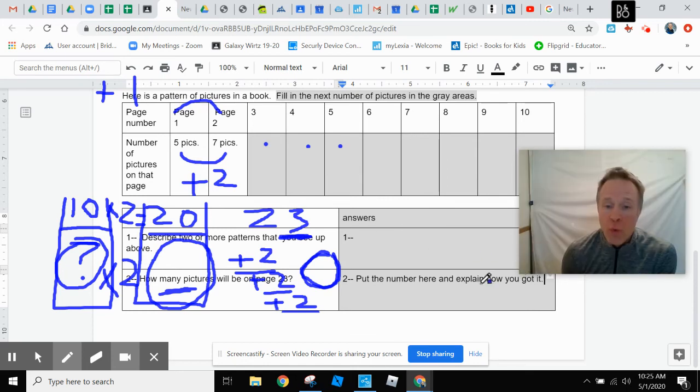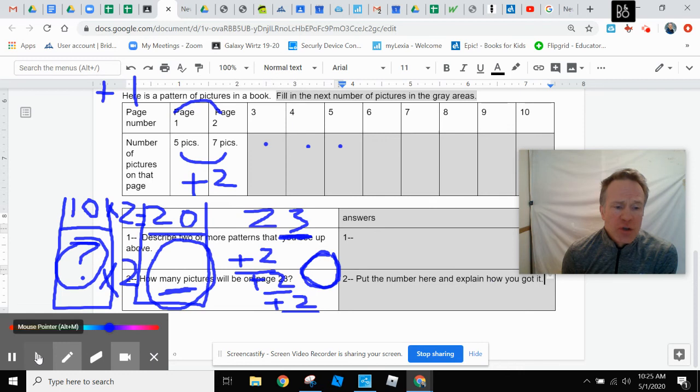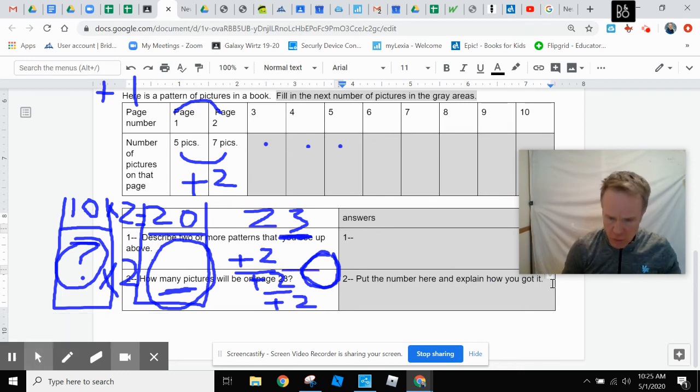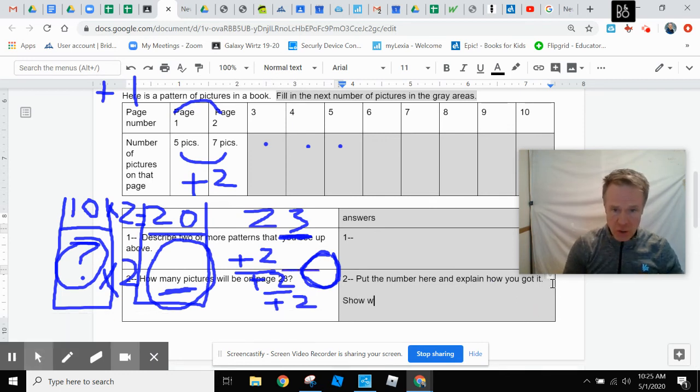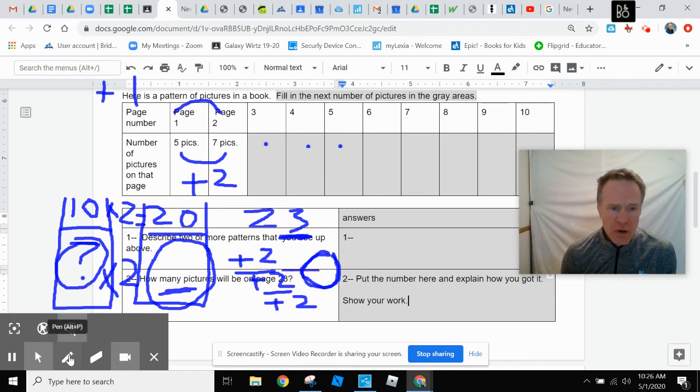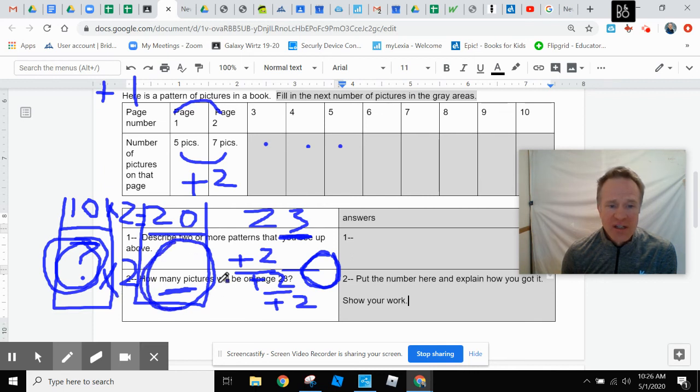All right, but whatever way you do, you do need to show your work down below here. You can do a bunch of plus 2's, plus 2's, plus 2's, or you can do it my quick strategy. Since 10 times 2 is 20, you do that number times 2 to get this, and then you add 3 more 2's to get your final answer.